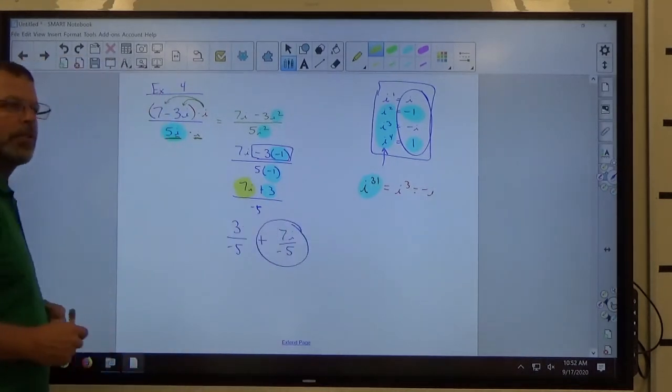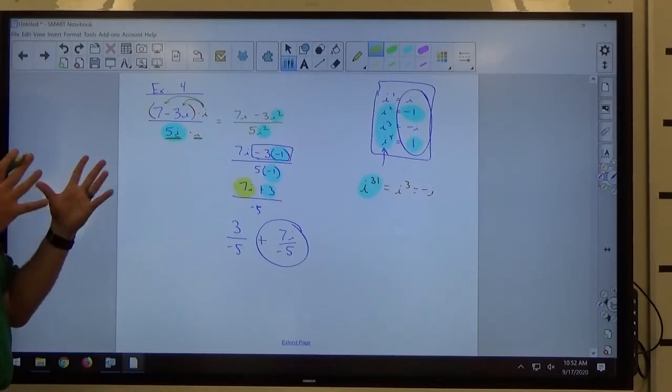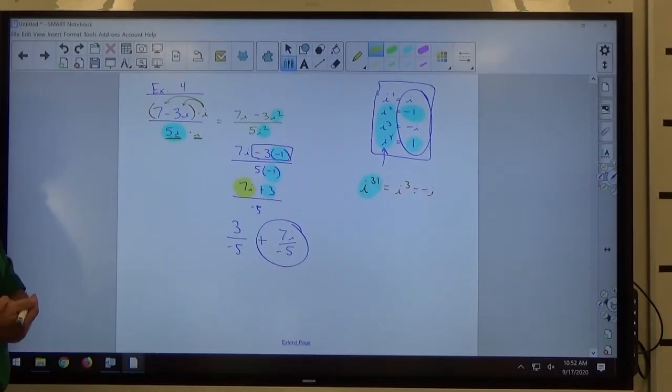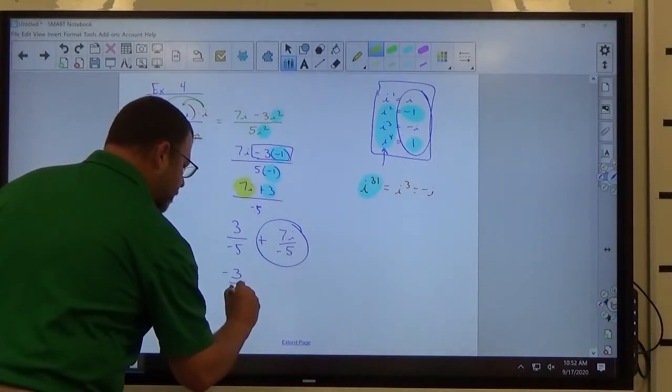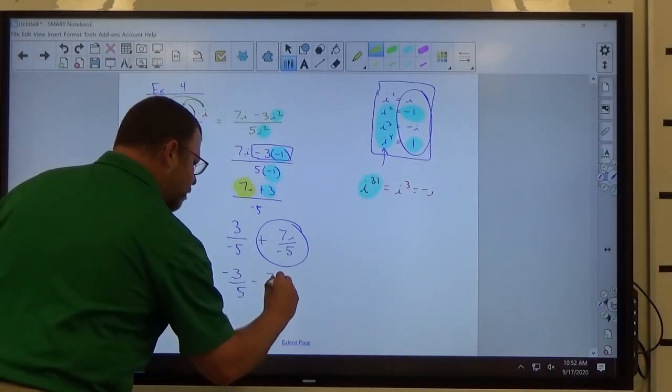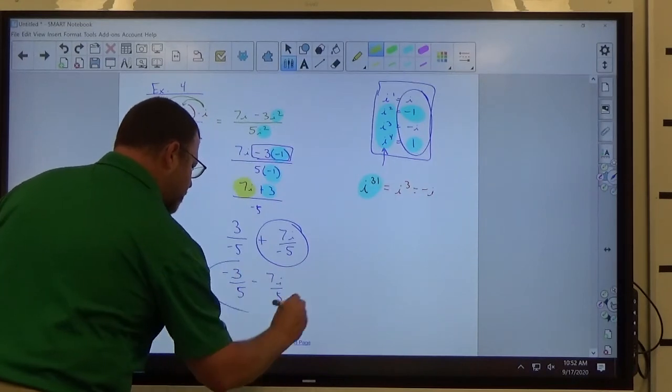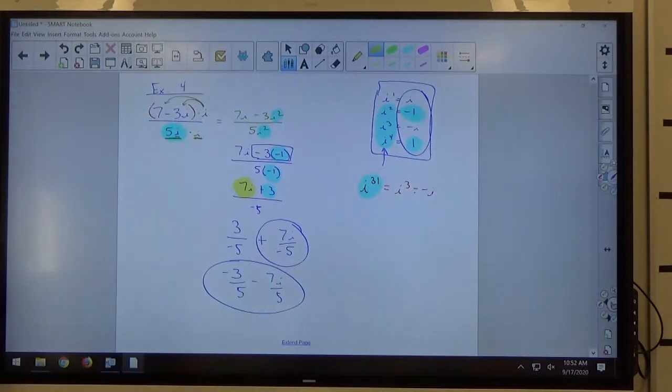Plus negative is the same as minus, right? So if I was finishing out this answer to make the most beautiful final answer possible, I'd write negative 3 fifths minus 7i over 5. That's how I'd write my final answer on that one. It doesn't really matter where the minus sign goes in that first fraction, but usually we put them on top, so that's where I'd probably put it.